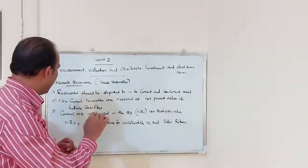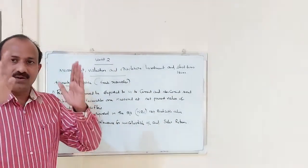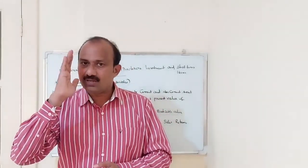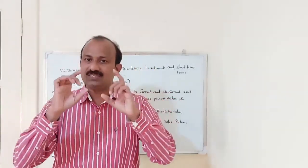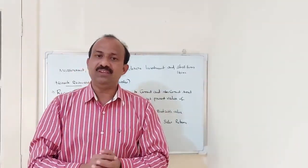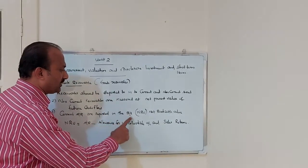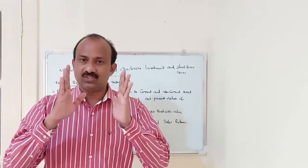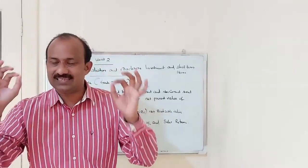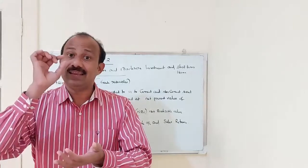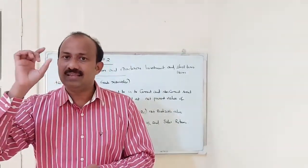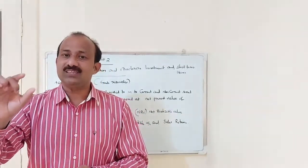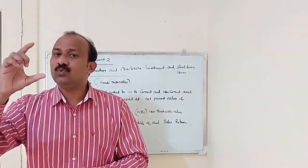Now, current accounts receivables. We know that accounts receivable is the most important item shown on the balance sheet under current assets. Whenever you are showing or recording accounts receivable in the balance sheet, the amount should be shown at NRV — net realizable value. Current accounts receivables are reported in the balance sheet at NRV, net realizable value.